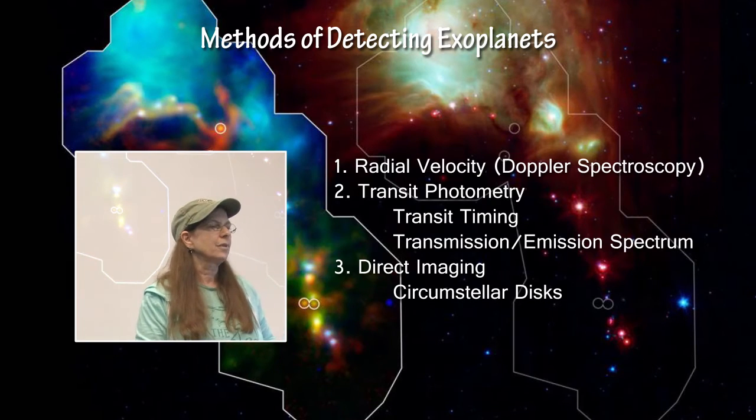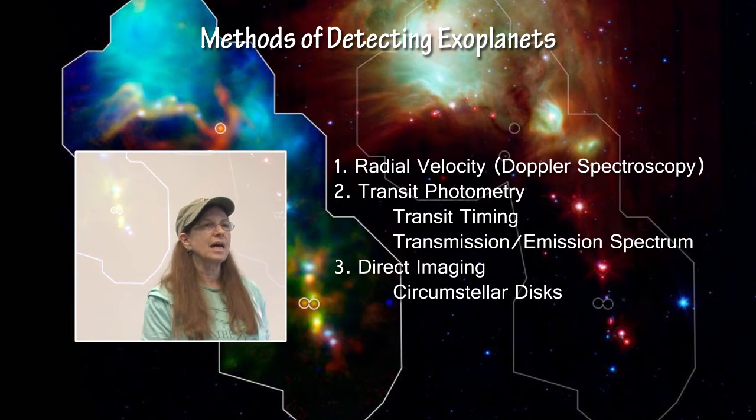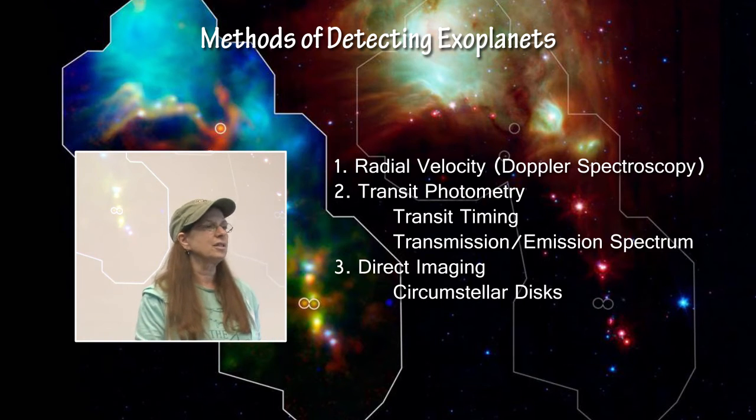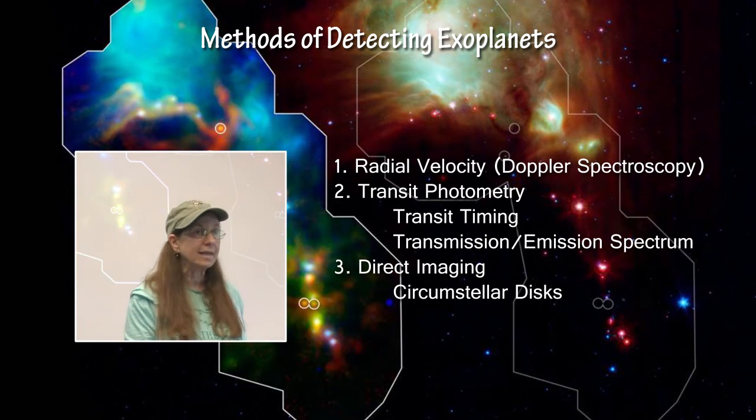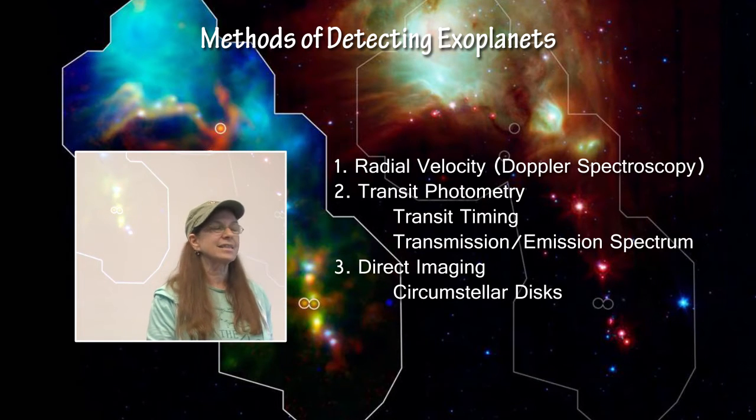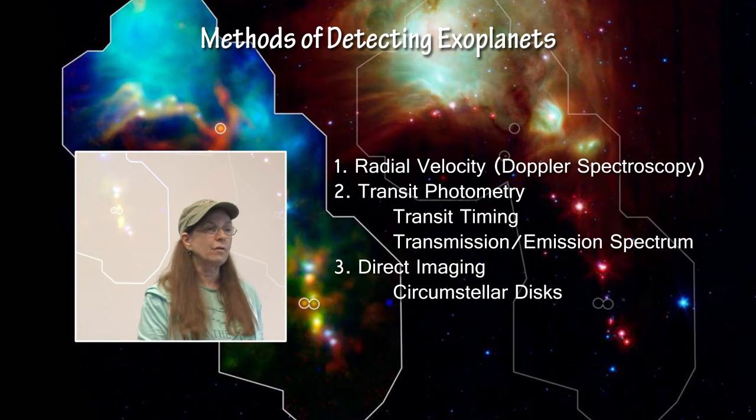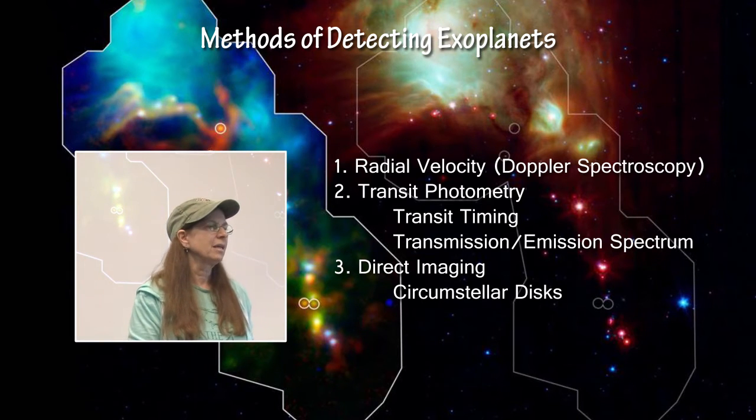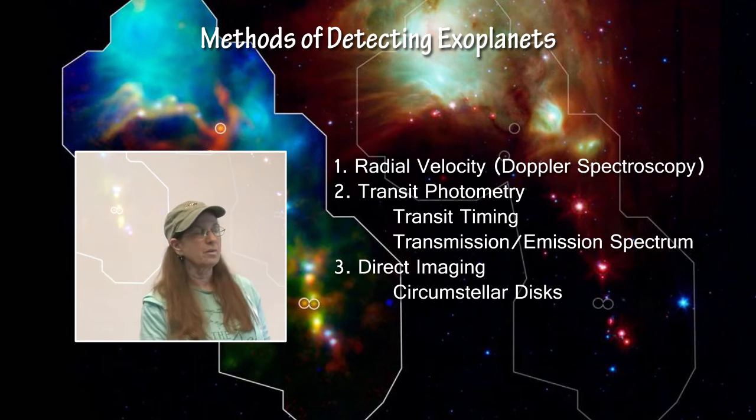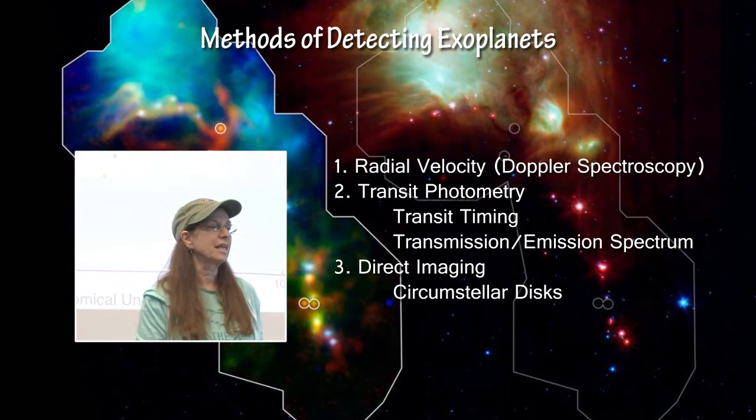There are different methods of detecting exoplanets. Each method has advantages and disadvantages, and they also differ in the physical characteristics that they can detect, such as mass, radius, or temperature. Radial velocity is one, which is Doppler spectroscopy, transit photometry, either timing or emission spectrum, and direct imaging of certain stellar disks.